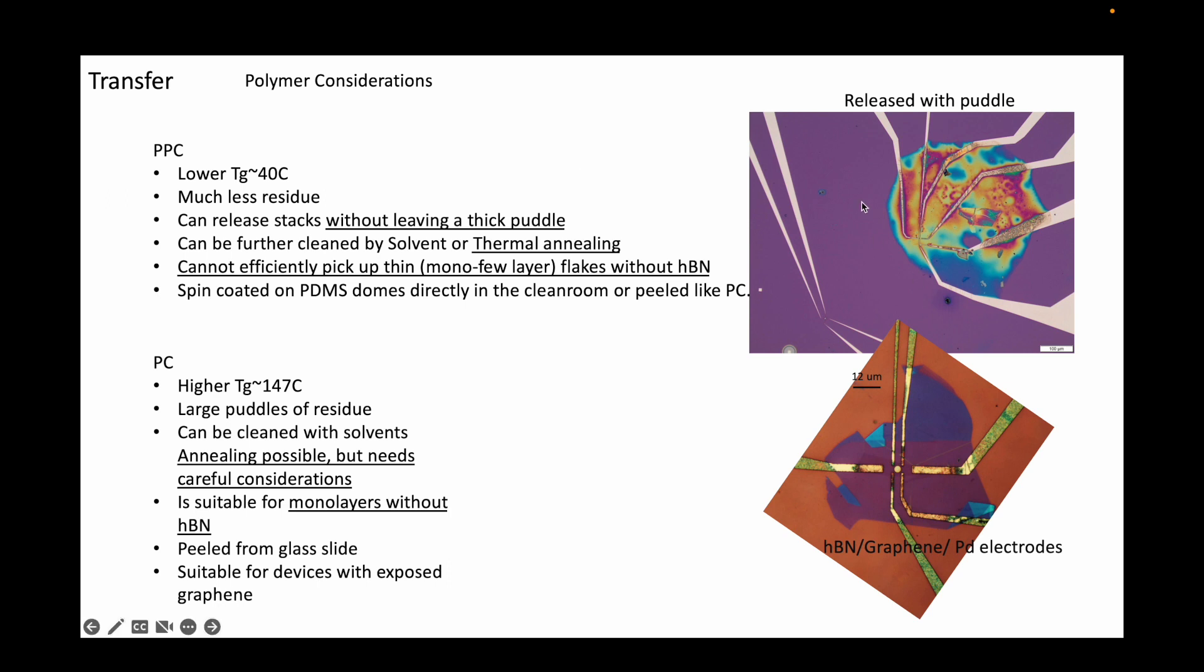What you see here on the top right is a puddle of PC after an attempt to clean it away using a thermal annealer. Before the annealing process, the amount of residue was even worse.